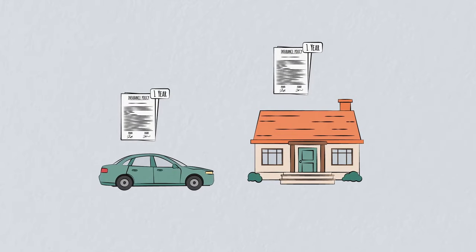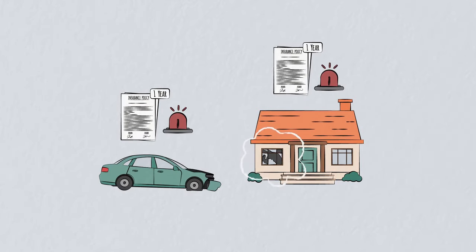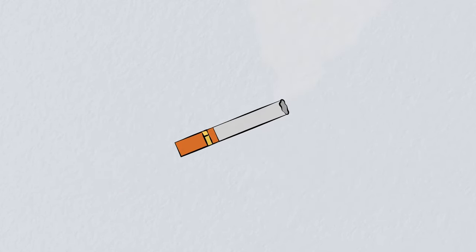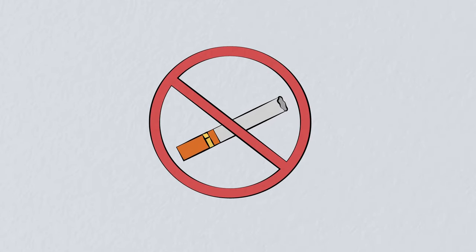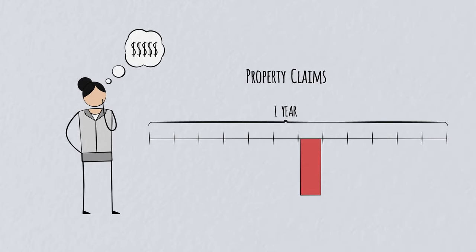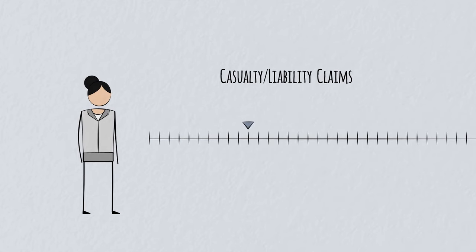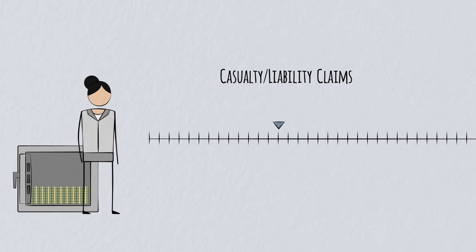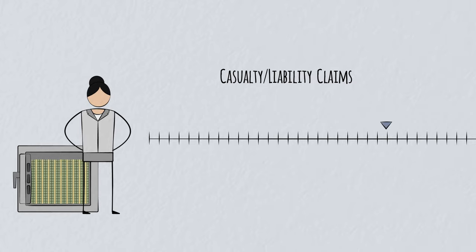Most property claims happen within the year of policy. A car accident or property damage is usually known immediately. Liability claims may take longer. For example, a product's impact on public health might not be identified for many years. So insurers will have a good idea by the end of the year how big the claims are for property risks. For liability, the risk may in theory play out at any time in the future, but as each year passes insurers can be increasingly confident about the size of any future claims they will need to pay out.